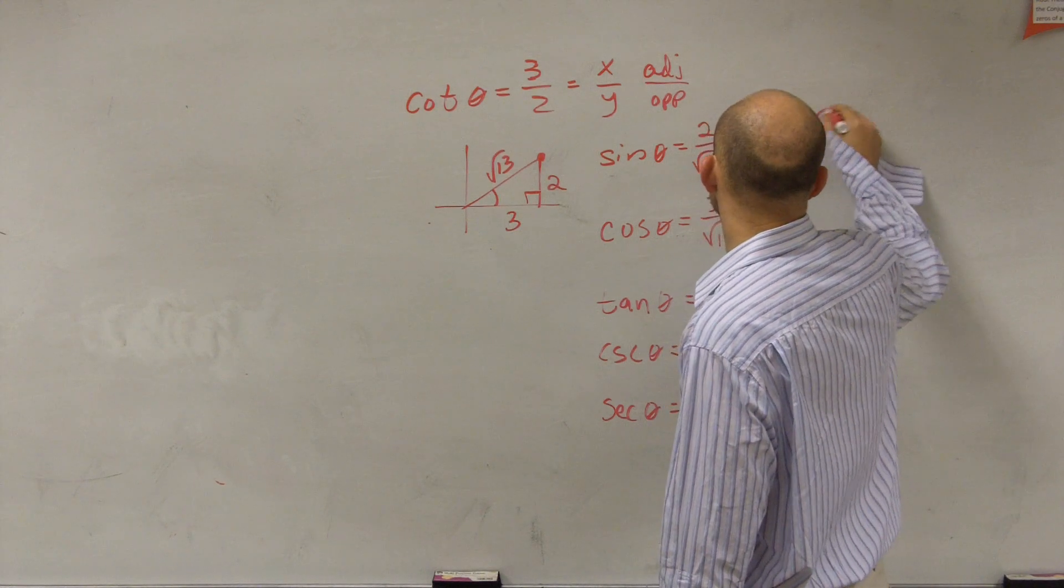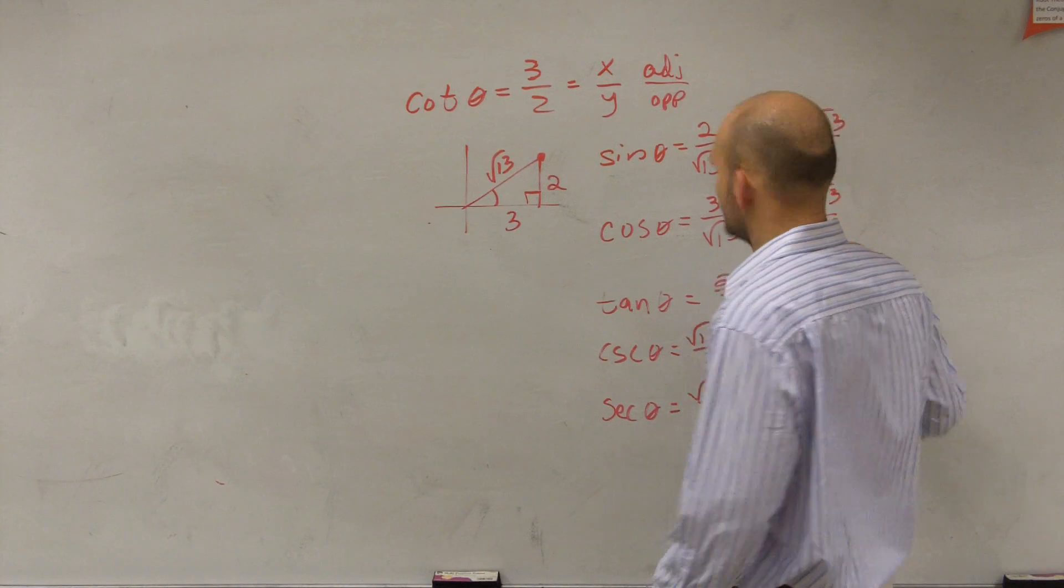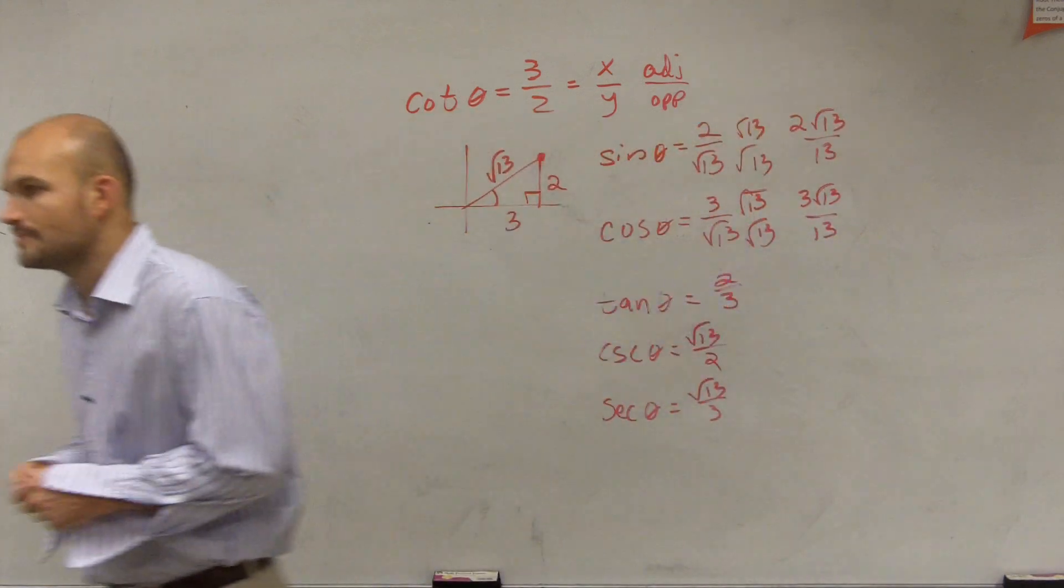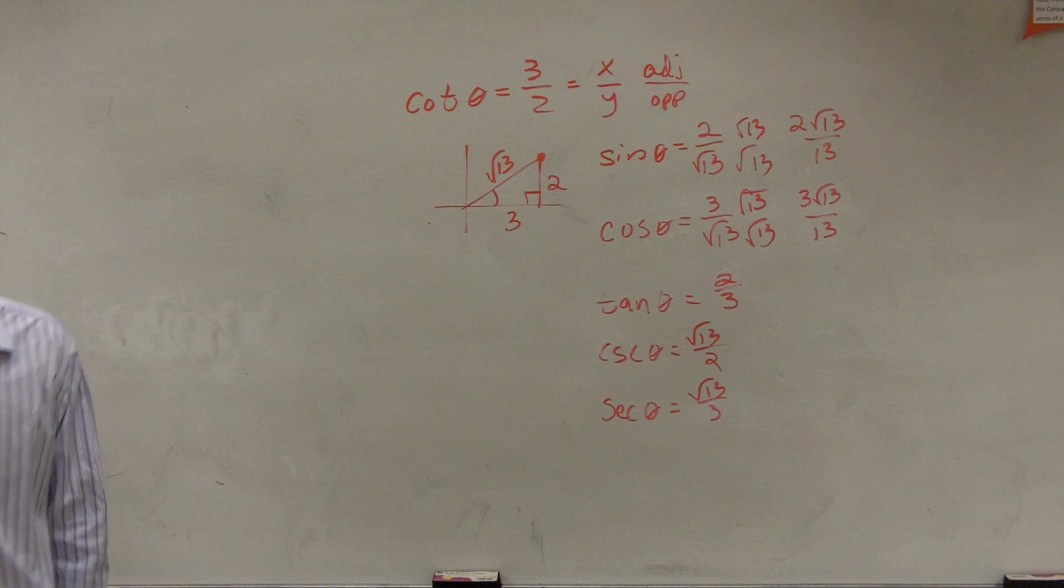When you rationalize, you get 2 square root of 13 over 13, and 3 square root of 13 over 13. Any questions so far? No? Feel good? Awesome.